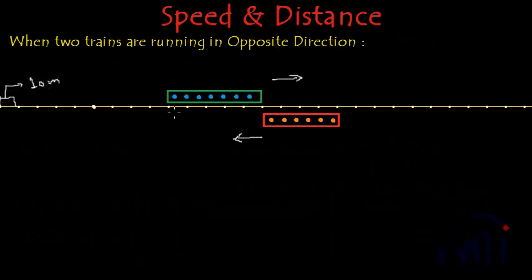What will be the length of the green train? Counting 1, 2, 3, 4, 5 partitions — each is 10 meters — so the length of the green train is 50 meters. The length of the red train is 1, 2, 3, 4 partitions, so the length of the red train is 40 meters.